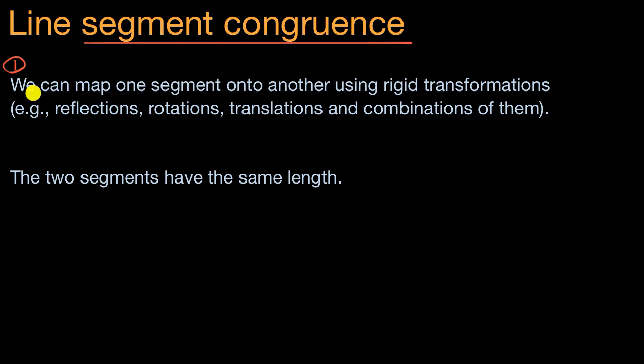Two segments are congruent. That means that we can map one segment onto the other using rigid transformations. And examples of rigid transformations are reflections, rotations, translations, and combinations of them.